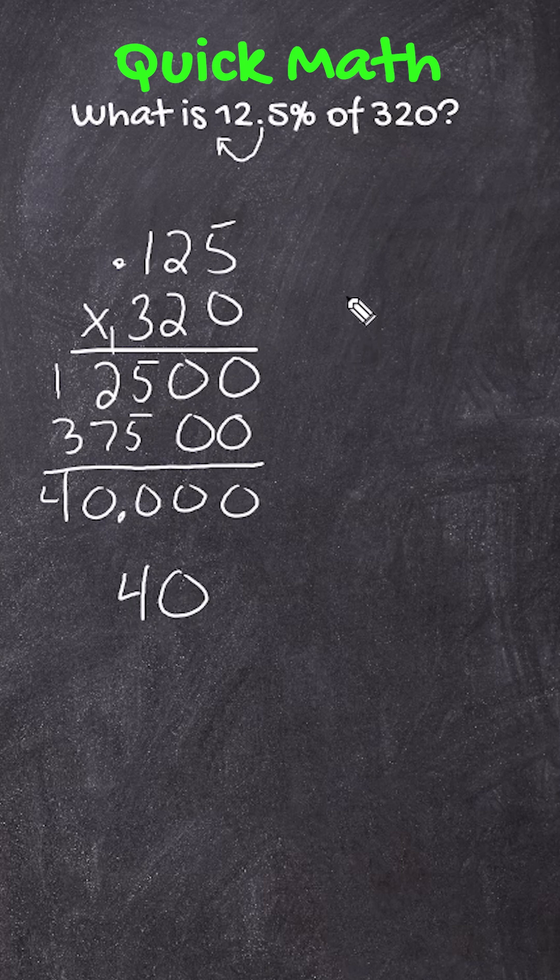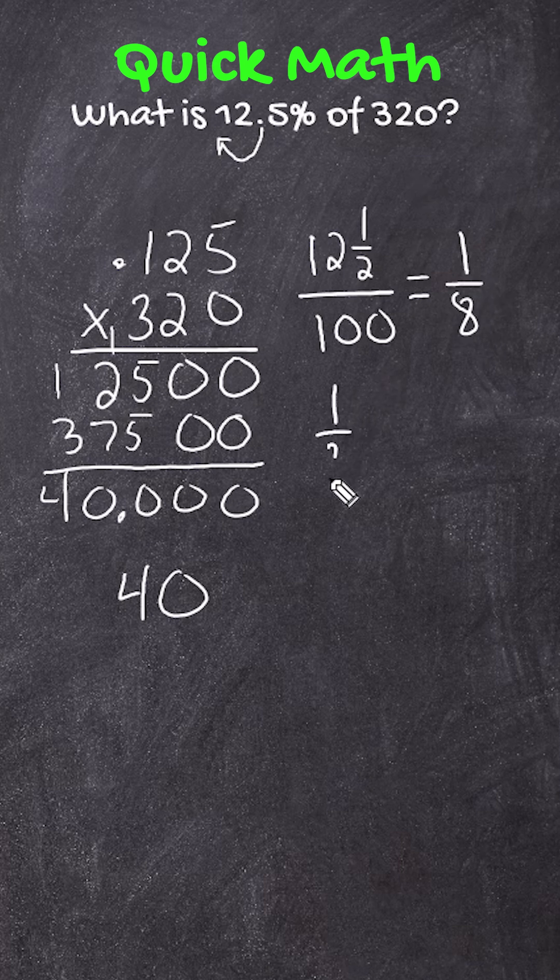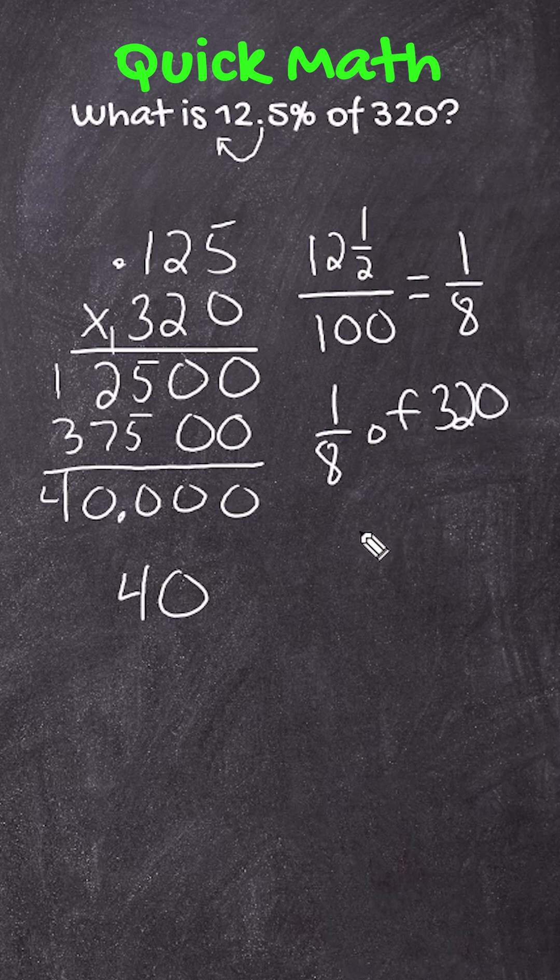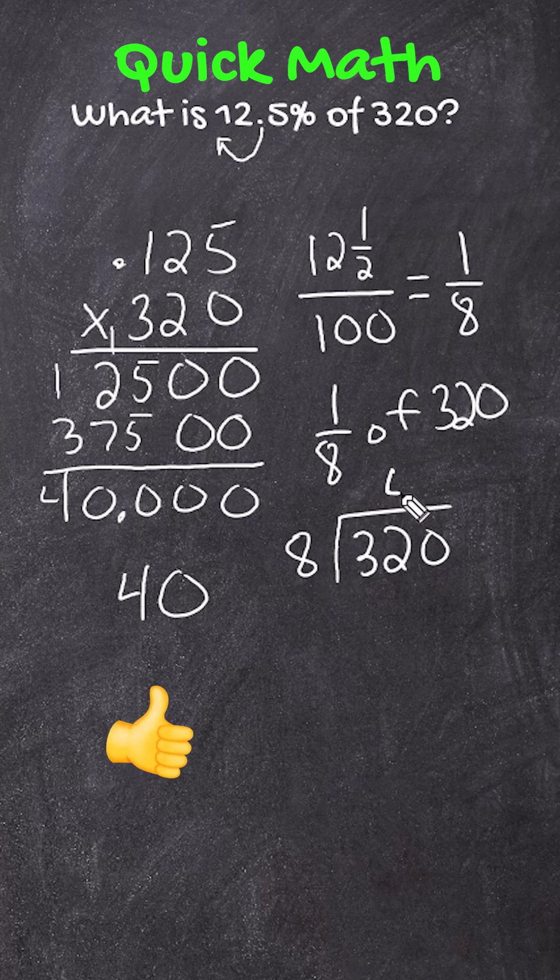Now another way we could have solved this problem is to recognize that 12.5% or 12.5 out of 100 is equivalent to 1/8. So we could have thought about this problem like 1/8 of 320. So we could have just taken 320 and divided it by 8, which would also give us 40.